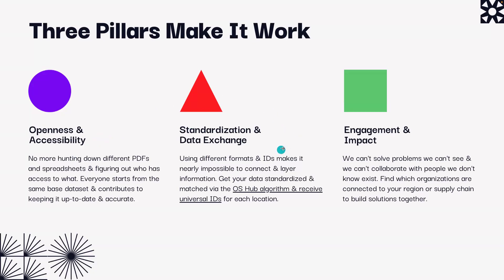Secondly, standardization and data exchange. One of the biggest barriers to collaboration is data quality. Using different data formats and IDs makes it nearly impossible to connect, match, and layer datasets. OS Hub is built on a human-in-the-loop machine learning algorithm that is trained to standardize and match information about production locations as they come into the platform from various sources. You then get a single profile for each supply chain location, which includes all the aliases and versions of information submitted, but living under one universal, interoperable ID.